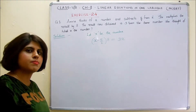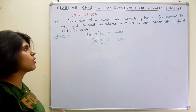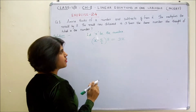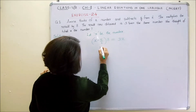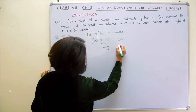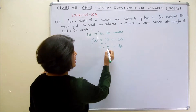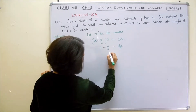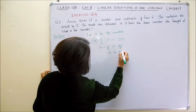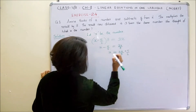Now you got a linear equation in one variable. You can apply any method like inverse or transpose to solve the equation. Here we have to eliminate 8 from the LHS. Then the equation would become x minus 5 by 2, which is equal to 3x by 8.